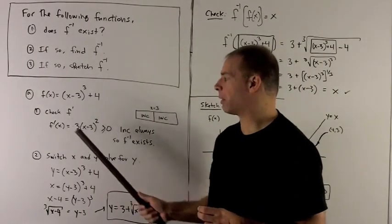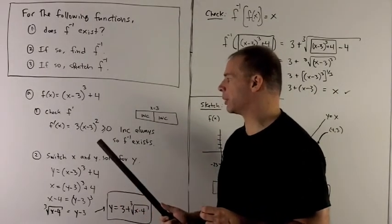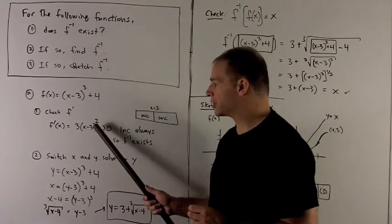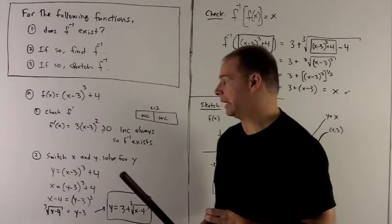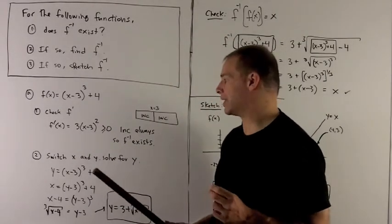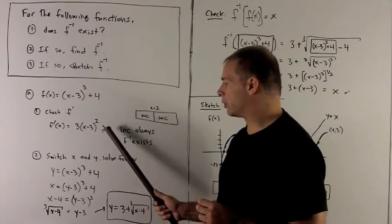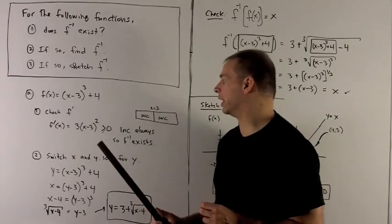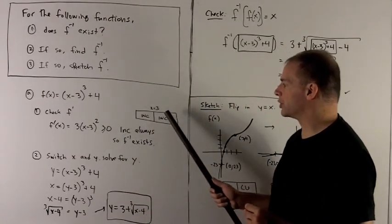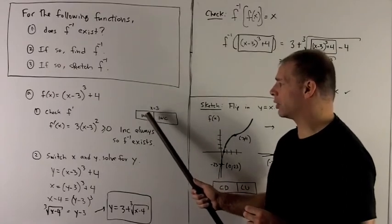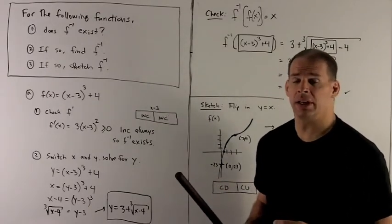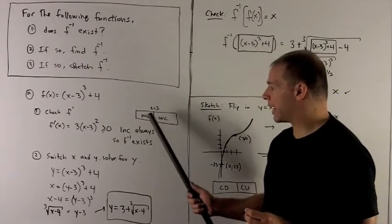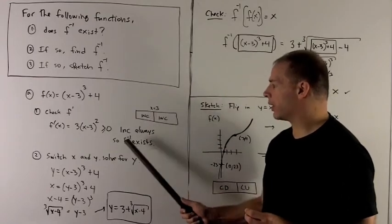So we take f prime, drop 3, subtract 1 off the exponent. That gives me 3(x minus 3) squared. Now if I square any number, it's going to be non-negative, meaning we're either going to get 0 or a positive number. So this will always be greater than or equal to 0, and equal to 0 only at the point x equal to 3. So if I'm looking at the regions, we take x equal to 3, and that's going to be increasing on both sides, since the derivative is always positive off of x equals 3.